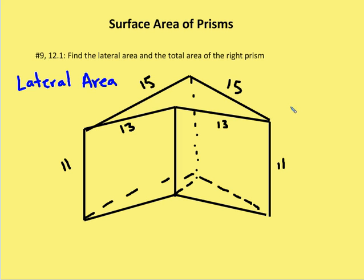In the first question, number nine, we're asked to find the lateral area and the total area of a right prism, as shown below in the diagram.